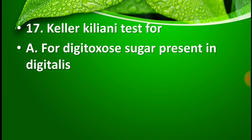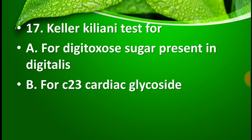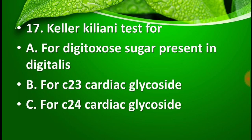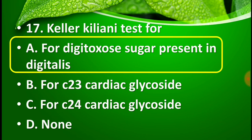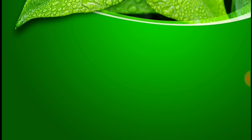Question number 17: Keller-Kiliani test is for — option A: digitoxose sugar present in digitalis, option B: C23 cardiac glycoside, option C: C24 cardiac glycoside, and option D: none of the above. The right answer for this question is option A — Keller-Kiliani test is for digitoxose sugar present in digitalis.